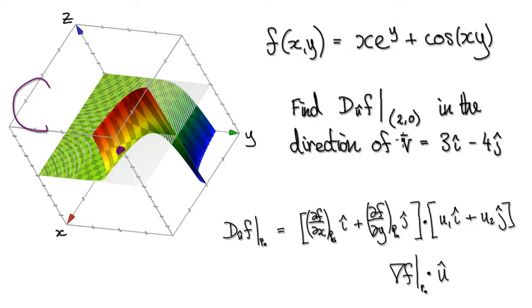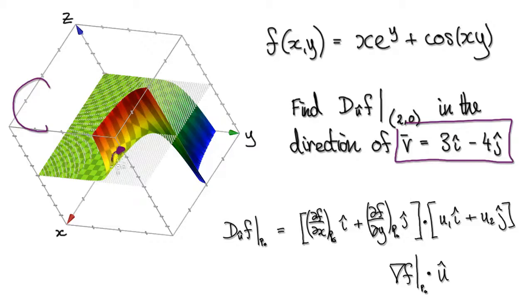We are talking about evaluating in the direction of 3 in the X direction — so 1, 2, 3 — and then negative 4 in the Y direction — 1, 2, 3, 4. So somewhere in this direction here.